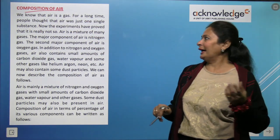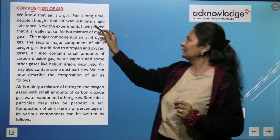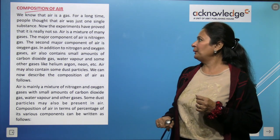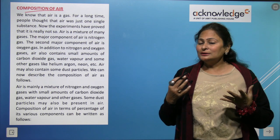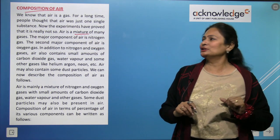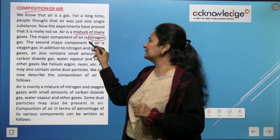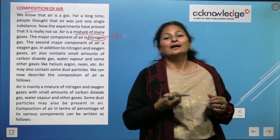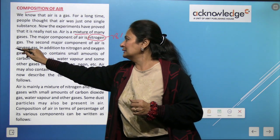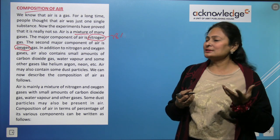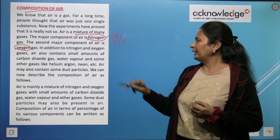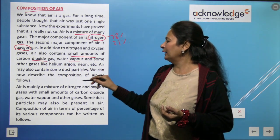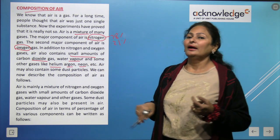The composition of air is our next topic. Air is a gas but not in its purest form — it is a mixture of gases. For a long time, people thought air was a single pure substance, but experiments have proved otherwise. The major component of air is nitrogen, at approximately 78%.